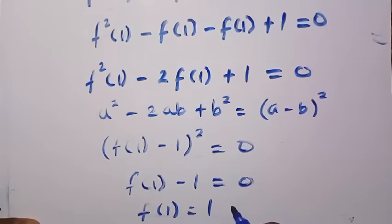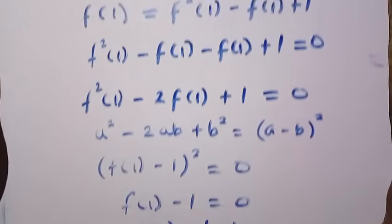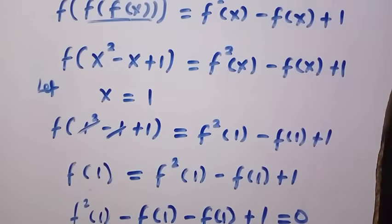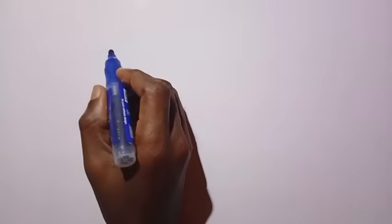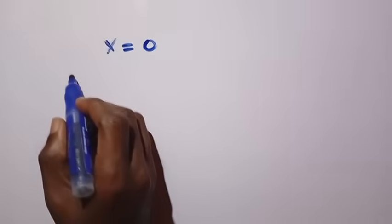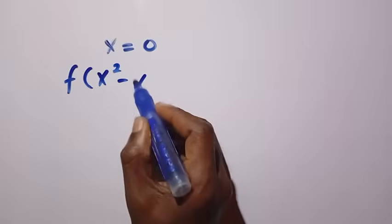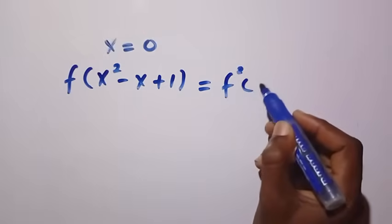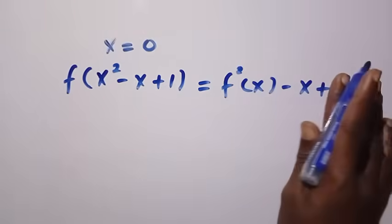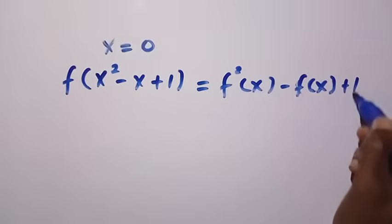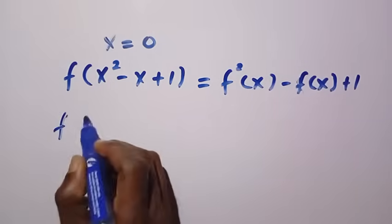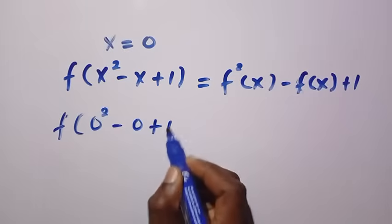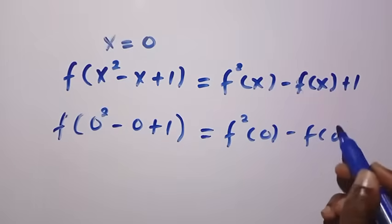So if f of 1 equals 1, we are going to start this. And again, we are going to assume that x equals 0 and see what will be the output, because we need f of 0. We have obtained what is f of 1, so let's see what will be f of 0 when we let x equal 0. We are going to substitute it into f of x squared minus x plus 1 equals f squared of x minus f of x plus 1. So we have 0 squared minus 0 plus 1 equals f squared of 0 minus f of 0 plus 1.